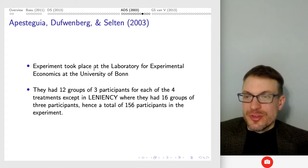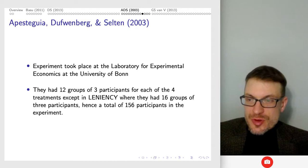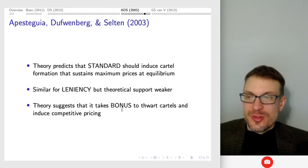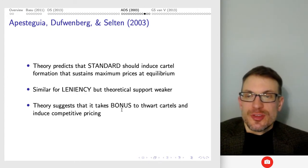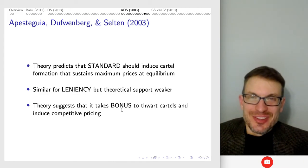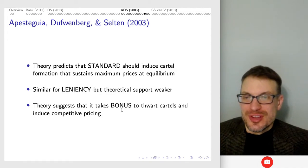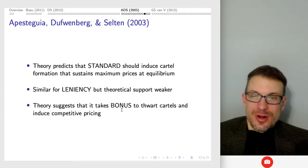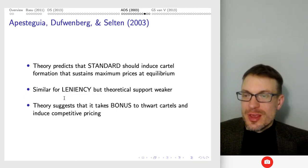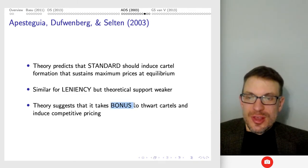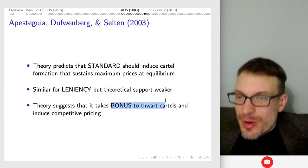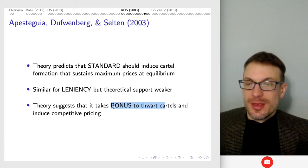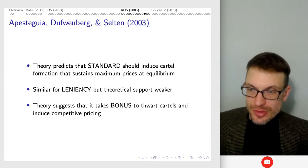The experiment took place at the University of Bonn with 12 groups of three participants for each of the four treatments, except leniency which had 16 groups, giving 156 participants total. Theory predicts standard should induce cartel formation that sustains maximal prices at equilibrium. Similarly for leniency, though the theoretical support is weaker. Theory suggests it should take bonus to thwart cartels and induce competitive pricing — you shouldn't be able to get competitive pricing except with ideal.